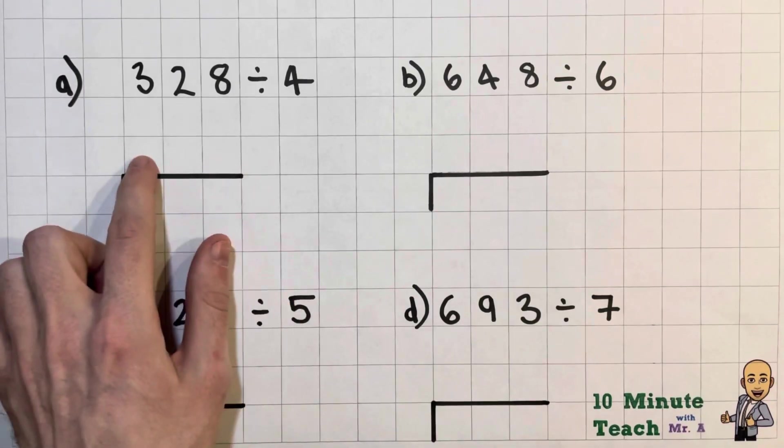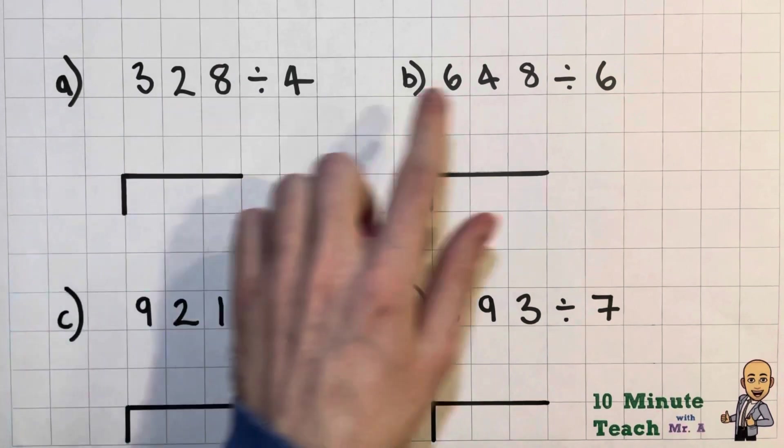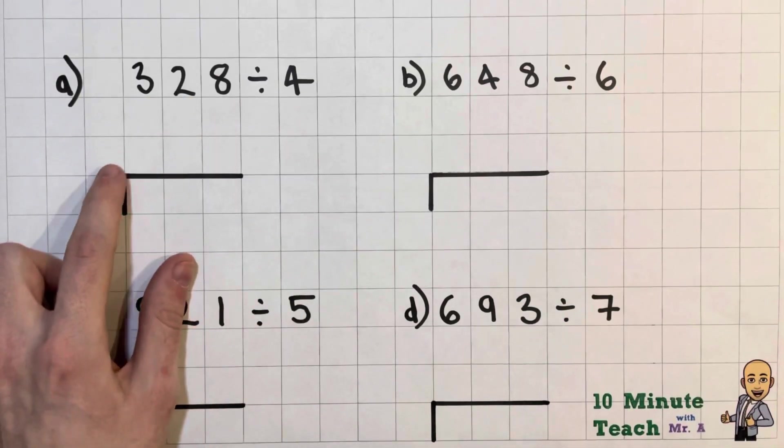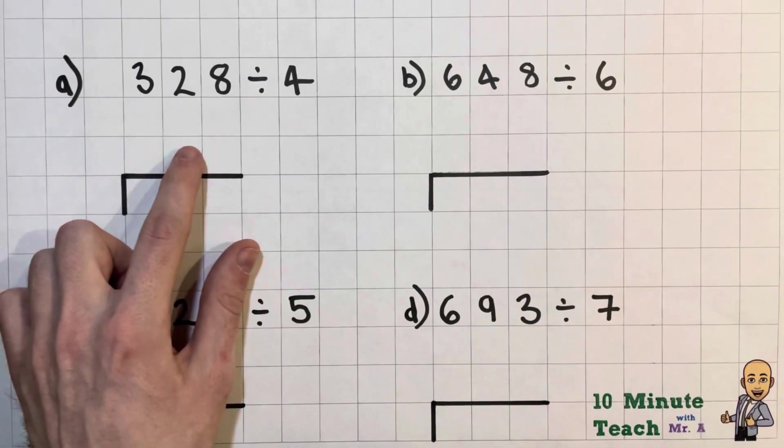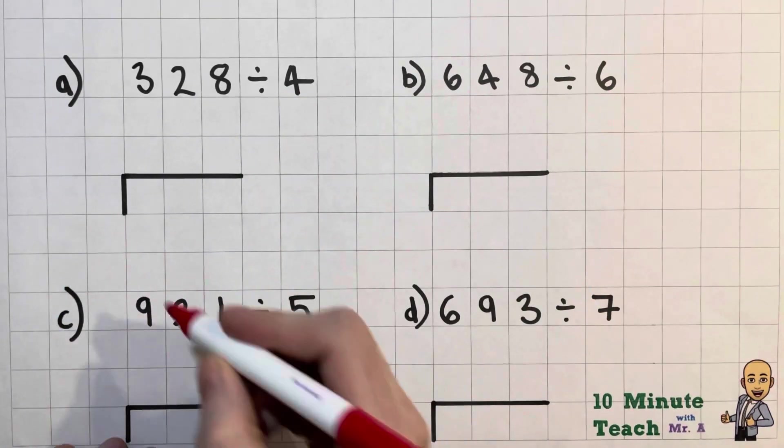We're going to be using bus stop methods to help us do this today. So I've written out some of our little bus stops and as you can see four questions to have a go at as well. Let's get straight into it. So how we're setting that up: I need my three columns for my hundreds, tens and units, and I'm going to put the number that I'm dividing by on this side here.